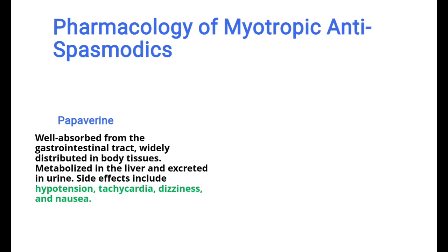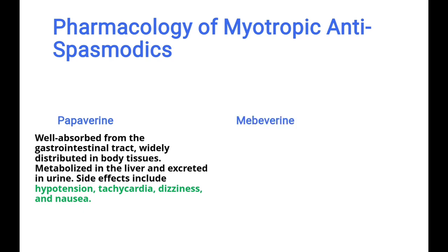Pharmacology of myotropic antispasmodics. First, papaverine: it is well absorbed from the gastrointestinal tract, widely distributed, metabolized in the liver, and excreted through urine. Side effects include hypotension, tachycardia, dizziness, and nausea.